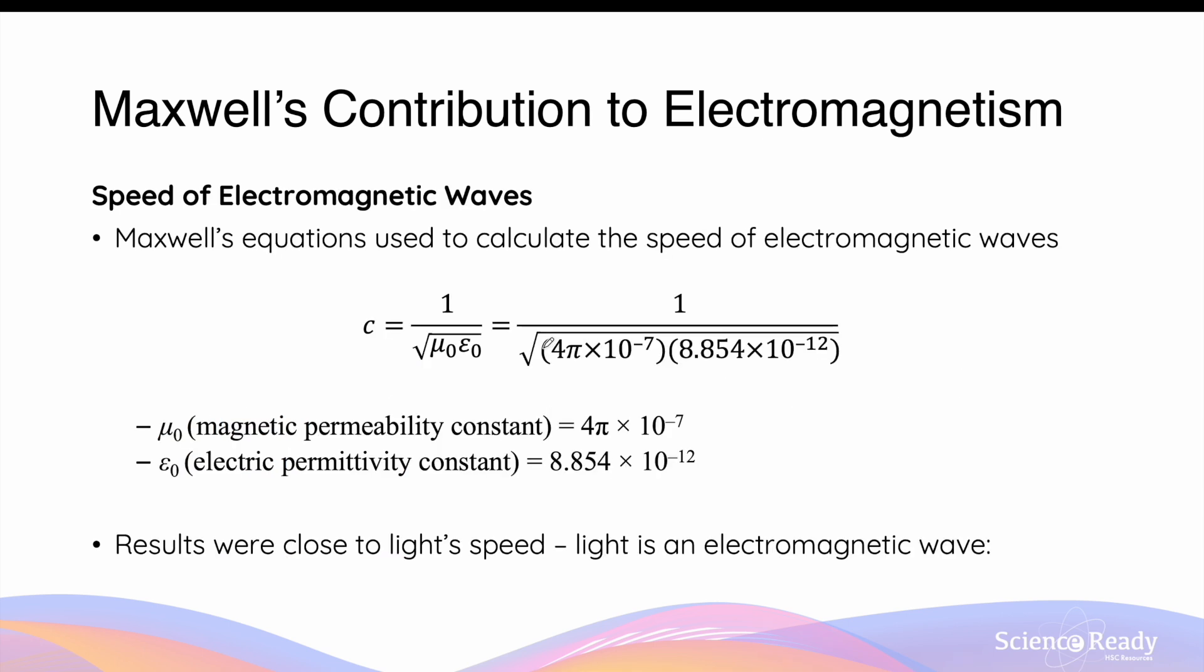Maxwell's third contribution was his calculation of the speed of the so-called electromagnetic waves that he predicted. Maxwell's equations were used to calculate the speed. The equation is simplified into c equals 1 over the square root of μ₀ and ε₀. μ₀ is the magnetic permeability constant, which is 4π times 10 to the power of -7, and ε₀ is the electric permittivity constant, which is 8.854 times 10 to the power of -12.